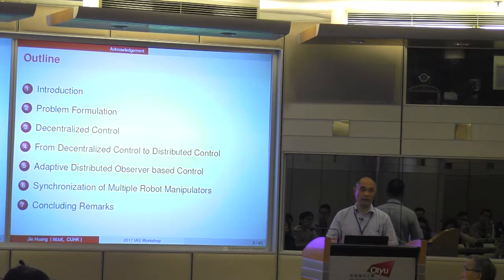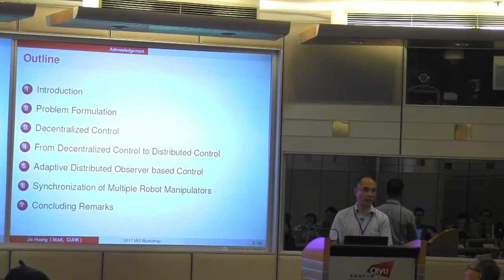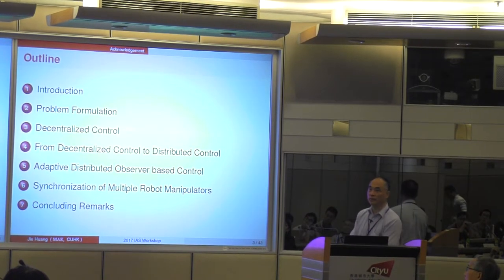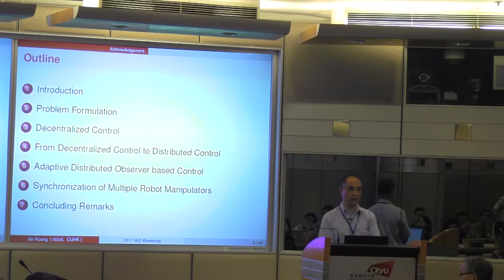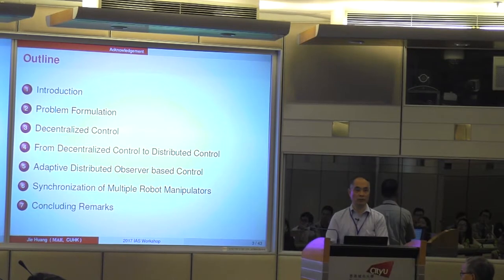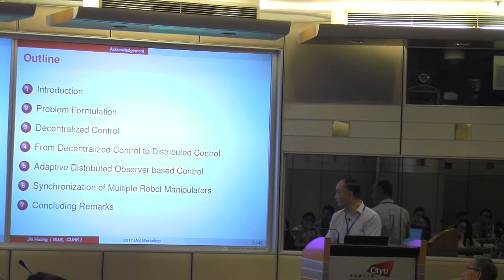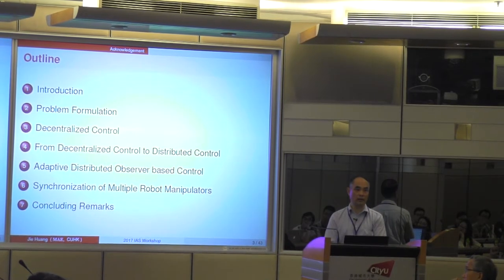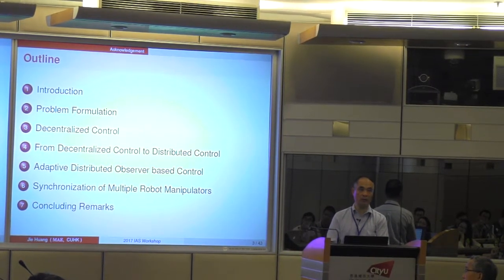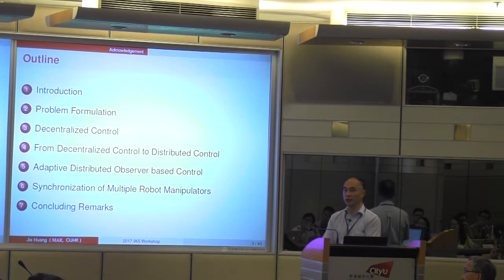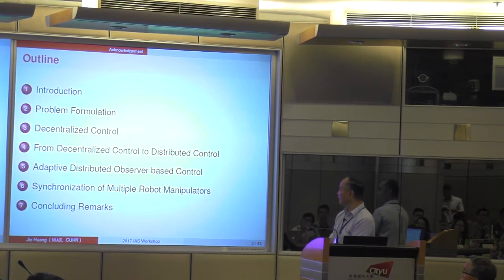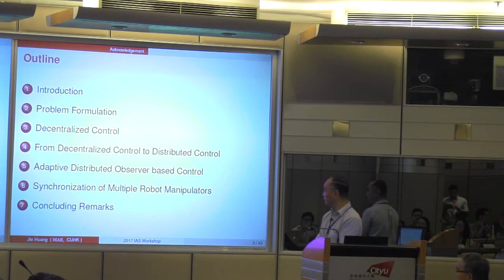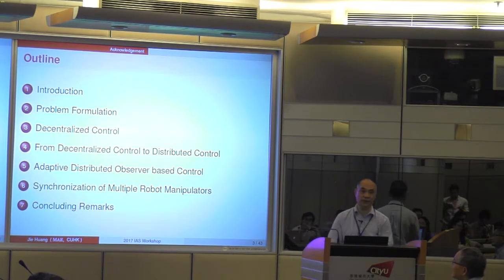The outline of my talk is as follows. I will start by introducing the background and motivation of the problem, then give a precise formulation of the control of multi-agent systems. After reviewing decentralized control, I will present a framework for designing a distributed control law based on a decentralized control law and a so-called adaptive distributed observer. Then we will illustrate our design by a synchronization problem of multiple robot manipulators, and finally close with some remarks.